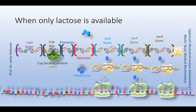The messenger RNA which is transcribed is a single polycistronic molecule which contains three sets of start and stop codons for the three proteins it codes. Its translation leads to the formation of three proteins required for the metabolism of lactose. In contrast to the lacZ, lacY, and lacA genes which are regulated, the lacI gene is a constitutive gene and is always active.